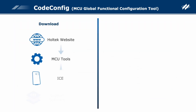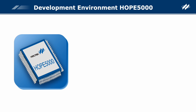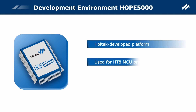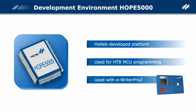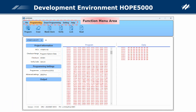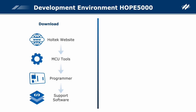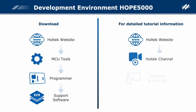The installation package can be downloaded from Holtec's official website. For more detailed tutorial information, please visit Holtec's official website. The Hope 5000 platform is developed by Holtec for HT-8 MCU code programming; it should be used with the development tool E-Writer Pro 2. The Hope 5000 main interface contains the function menu area and display area. The installation package can be downloaded from Holtec's official website.